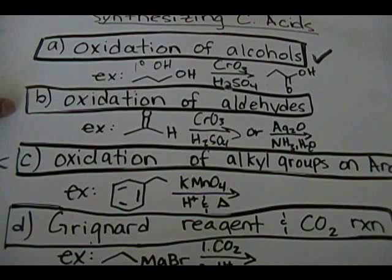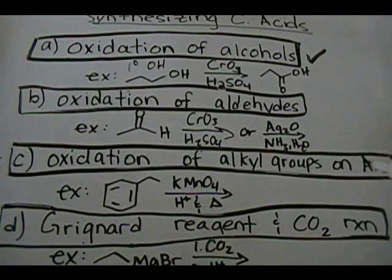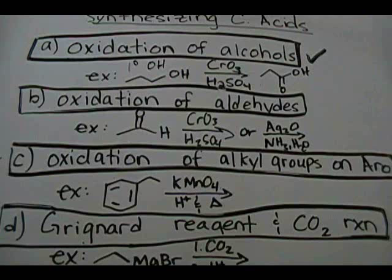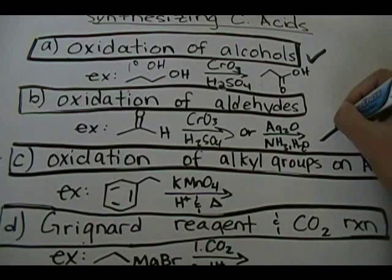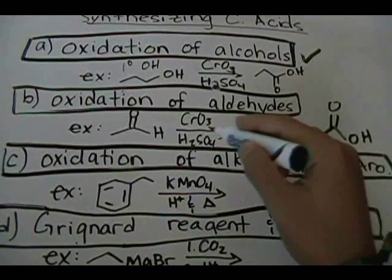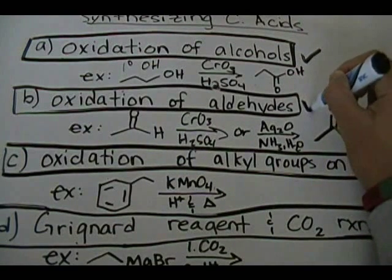The second reaction is the oxidation of aldehydes. You have two sets of reagents. If you have an aldehyde — it could be any type of aldehyde — you can use CrO3 and H2SO4 (the same reagent as above), or you can use H2SO4, ammonia, and water. Any one of these reagents would work and you'll get a carboxylic acid. All you have to do to draw your carboxylic acid is replace that H with an OH. That's the second reaction.